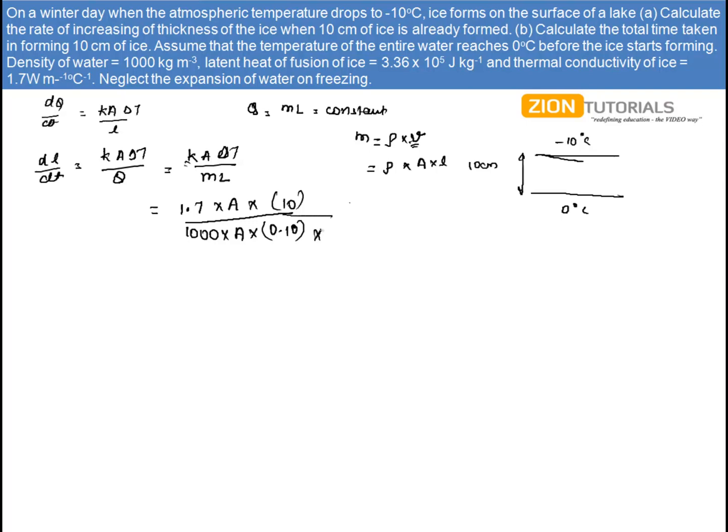And capital L, that is latent heat of fusion, that is given by 3.36 into 10 to the power 5. So A is cancelled over here.